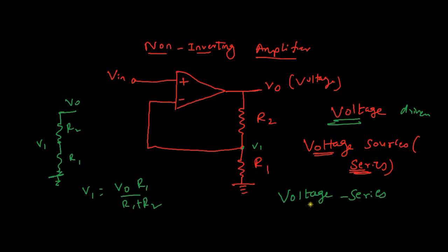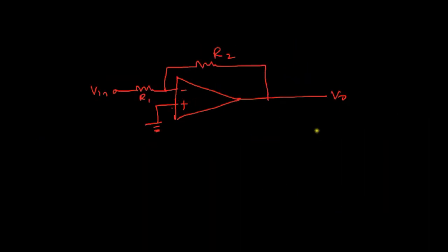Hence, the feedback topology is voltage series. As I said earlier, voltage series is also called series shunt. So this is the feedback topology of the non-inverting amplifier. The non-inverting amplifier uses voltage series topology, also called series shunt topology.